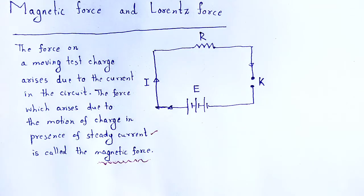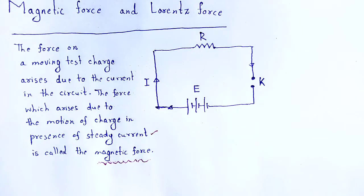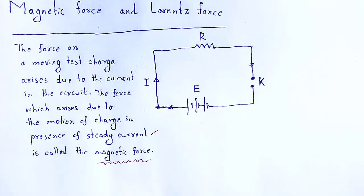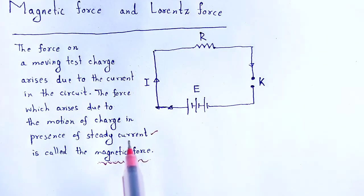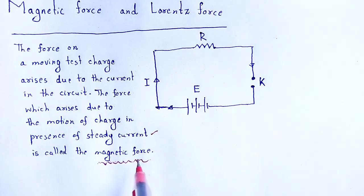There is a basic nature of charge: when a charge is at rest, the stationary charge creates an electric field. But when that charge moves, it creates a magnetic field associated with that electric field. So, what should be the magnitude and direction of that magnetic force?